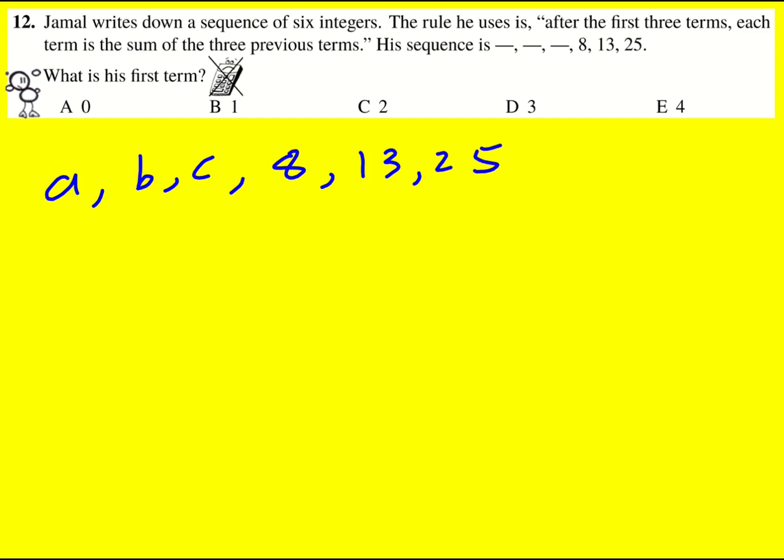And I then wrote down some equations. So after the first three terms, each term is the sum of the three previous terms. So to get 8, it's going to be a plus b plus c, which is not much good at the moment.